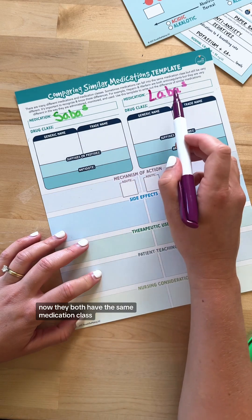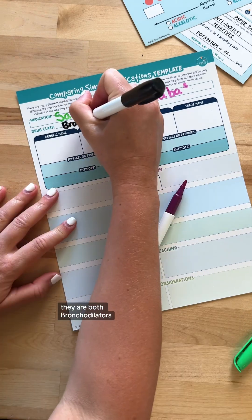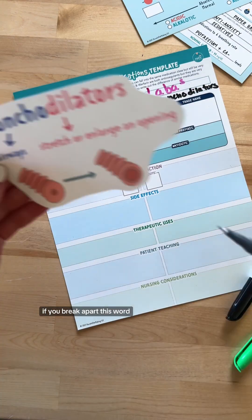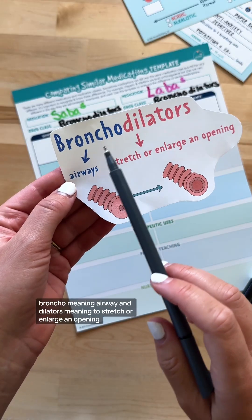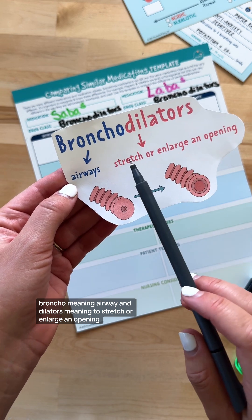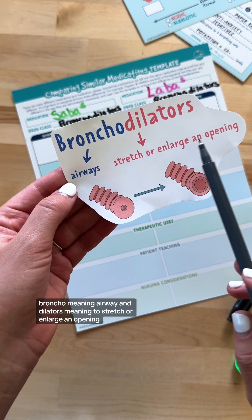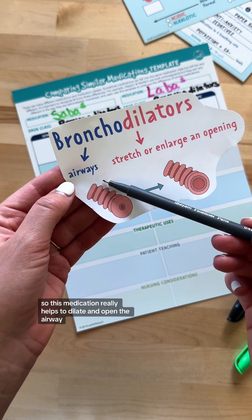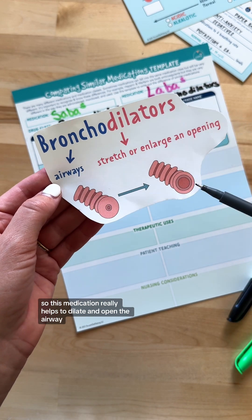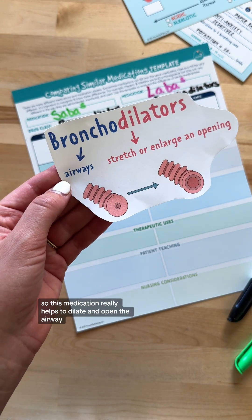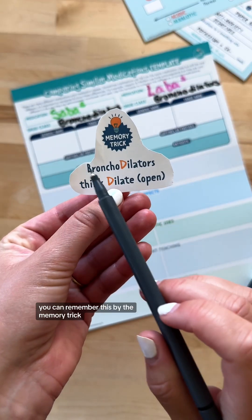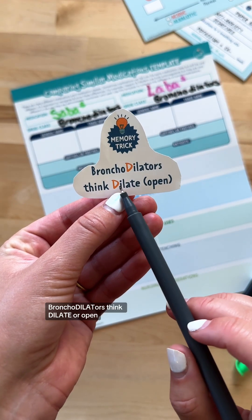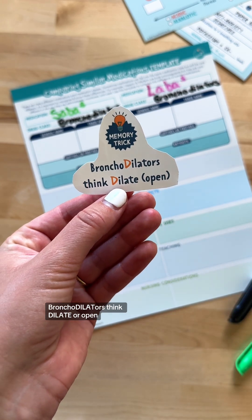They both have the same medication class — they are both bronchodilators. If you break apart this word, 'broncho' meaning airway and 'dilators' meaning to stretch or enlarge an opening, this medication really helps to dilate and open the airway. You can remember this with the memory trick: bronchodilators — think dilate or open.